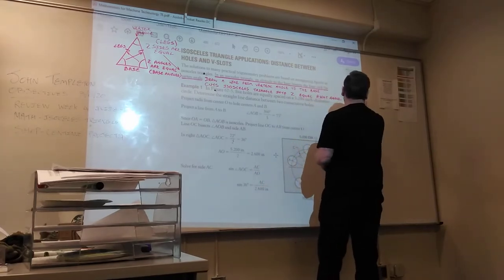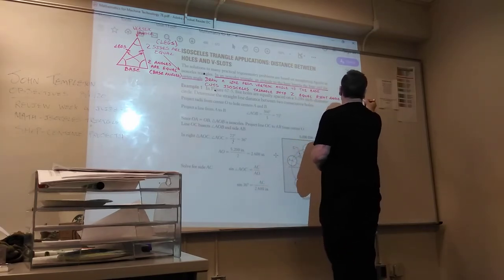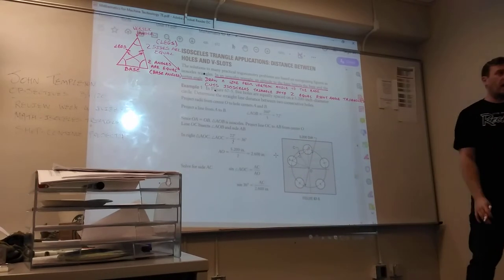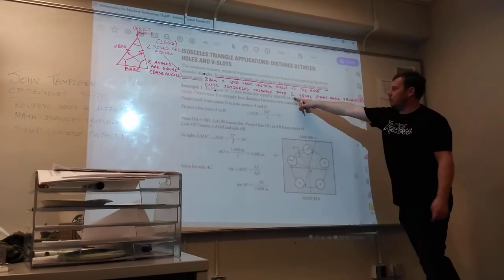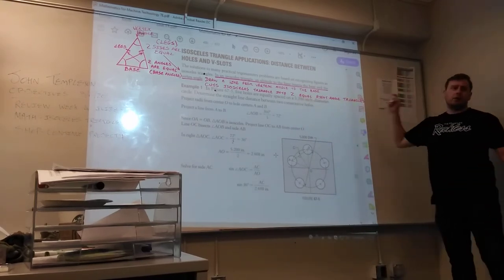And when you do that, it cuts the isosceles triangle in half and gives you two equal right angle triangles.